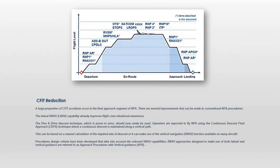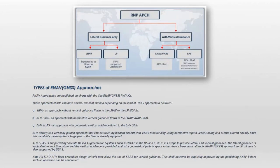Procedure design criteria have been developed that take into account the onboard V-NAV capabilities. R-NAV approaches designed to make use of both lateral and vertical guidance are referred to as approach procedures with vertical guidance. R-NAV GNSS approaches are published on charts with the title 'R-NAV GNSS Runway XX.' These approach charts can have several descent minima depending on the kind of R-NAV approach to be flown: NPA non-precision approaches, an approach without vertical guidance flown to the lateral navigation R-NAV or localizer performance LP minimum descent altitude.